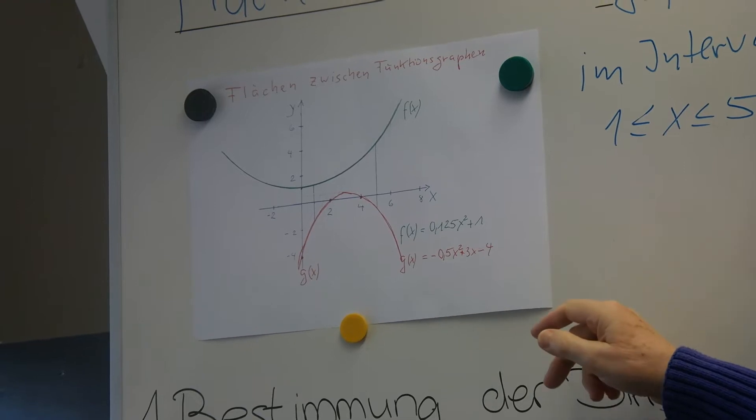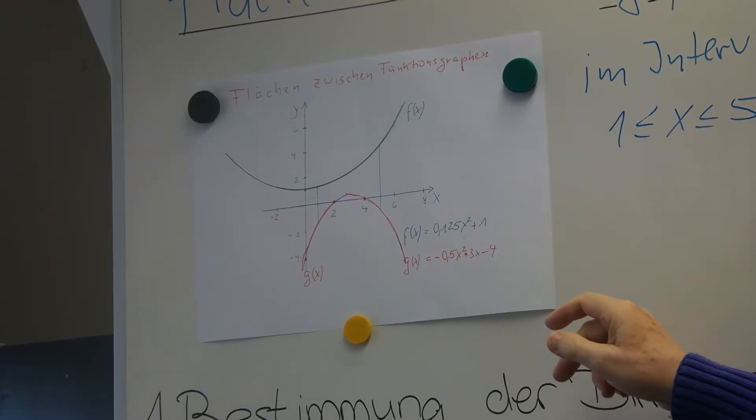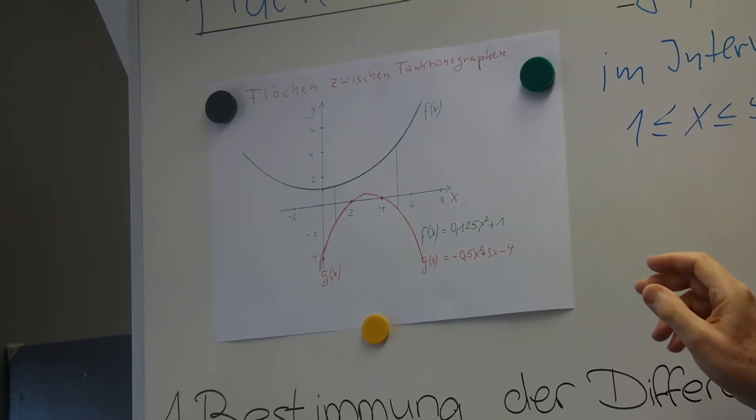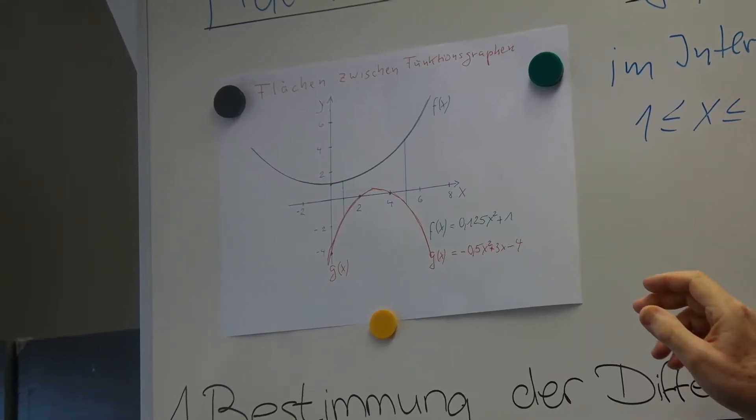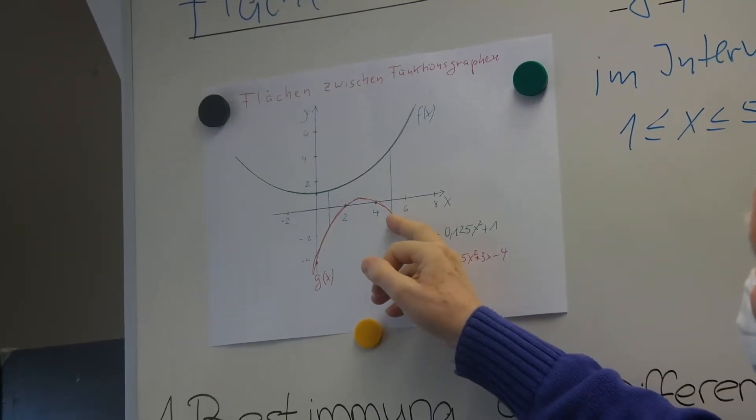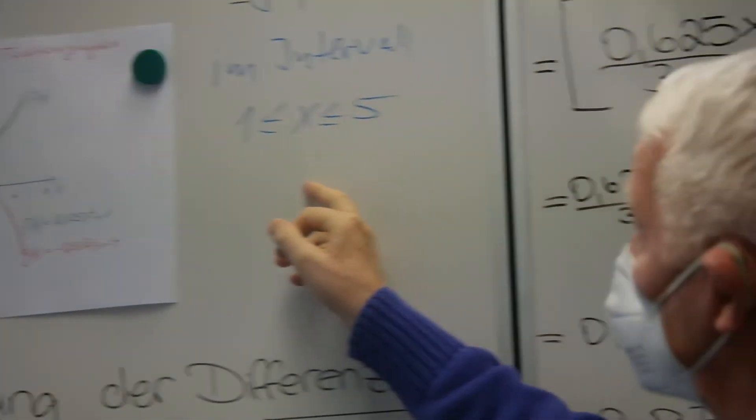f von x und g von x, wobei die Fläche, die von den beiden Funktionen gebildet werden soll, im Intervall von 1 bis 5 geht. Das haben wir hier nochmal hingeschrieben.